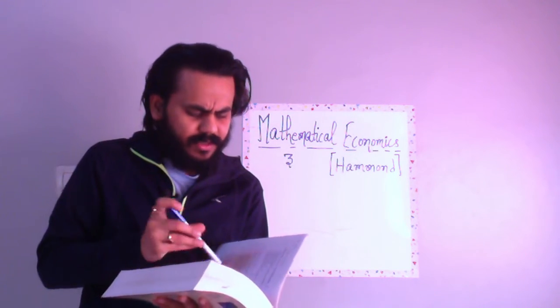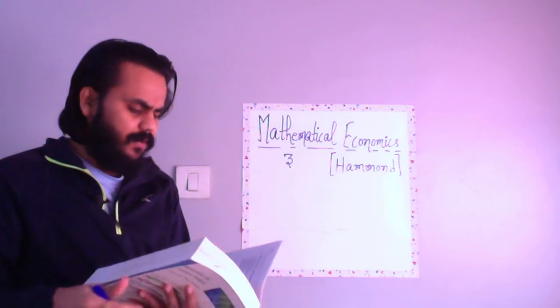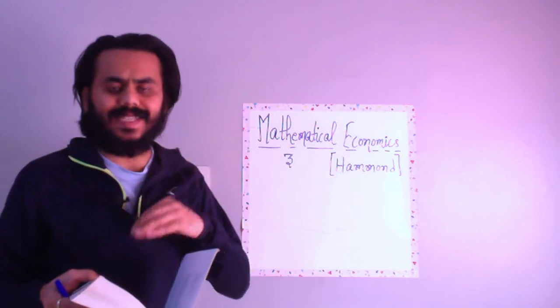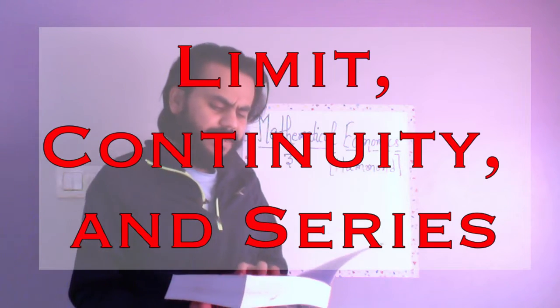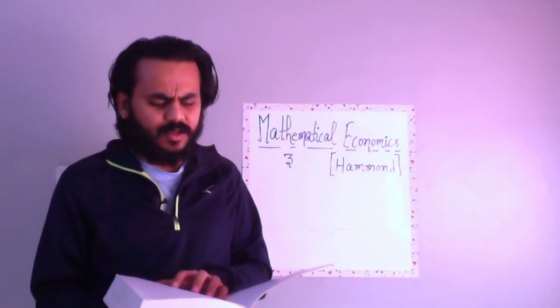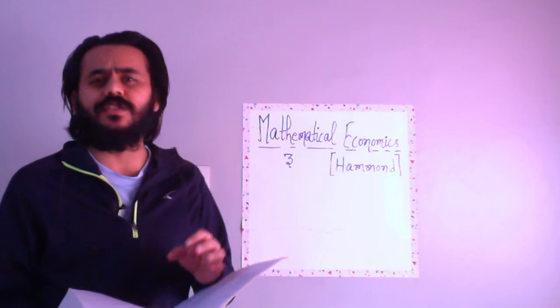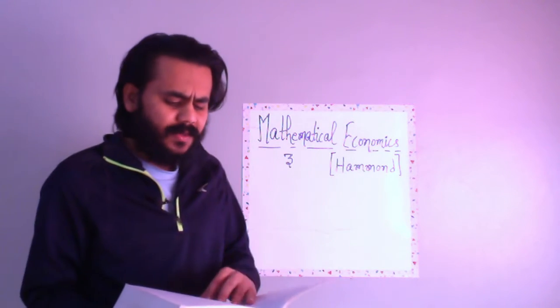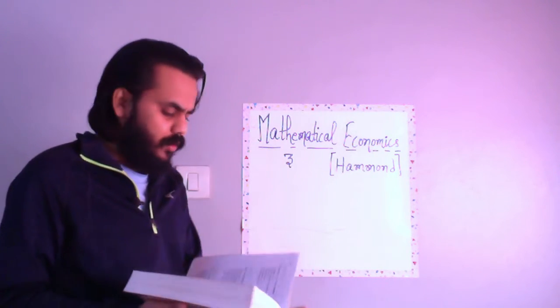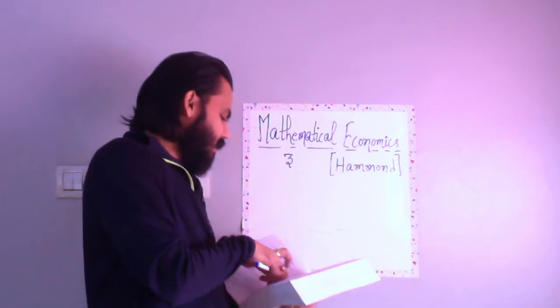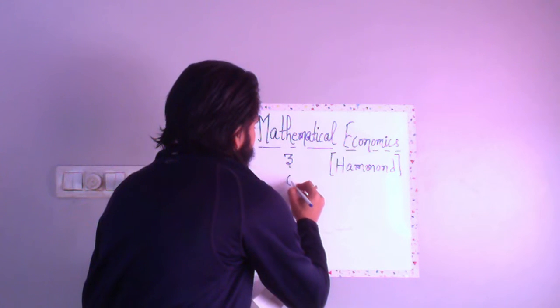Once you have done chapter three, next jump to chapter six. In chapter six you have limits, continuity and series. A lot of things you must have covered in your J math syllabus, but still there are few things which you need to be aware about.